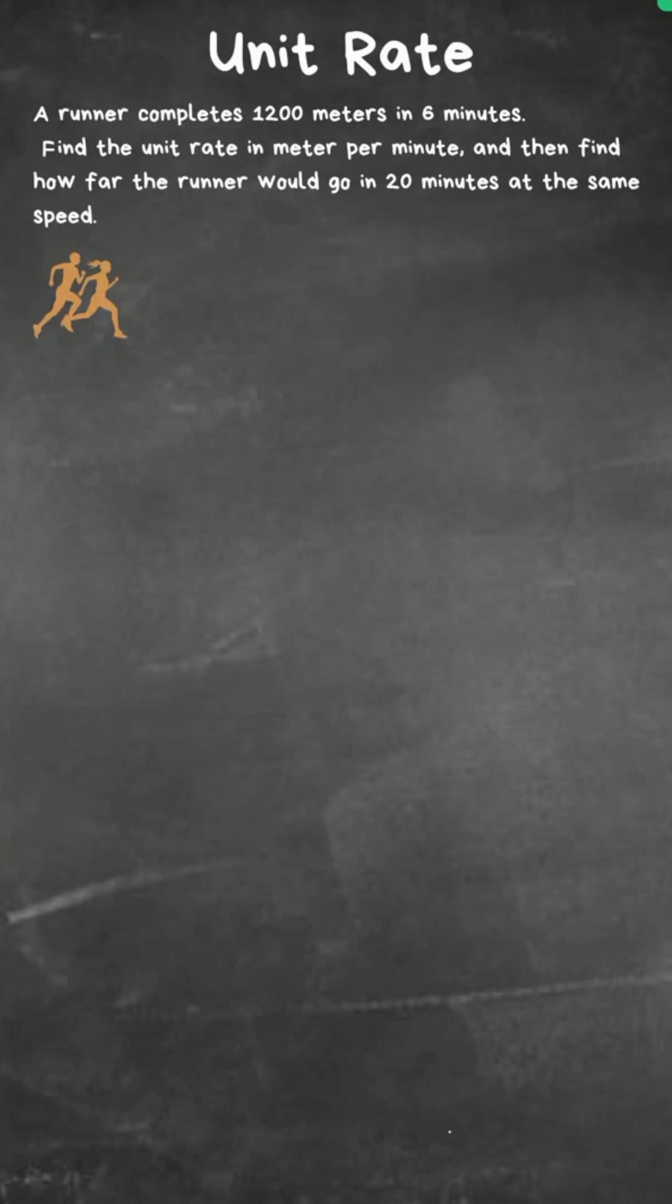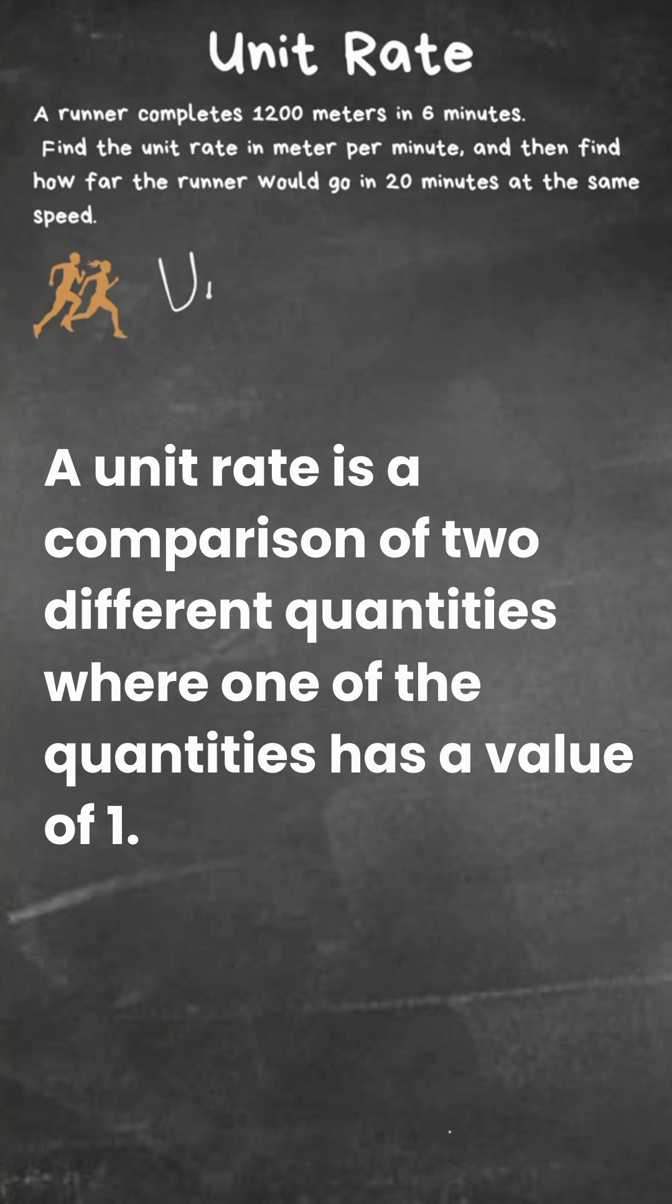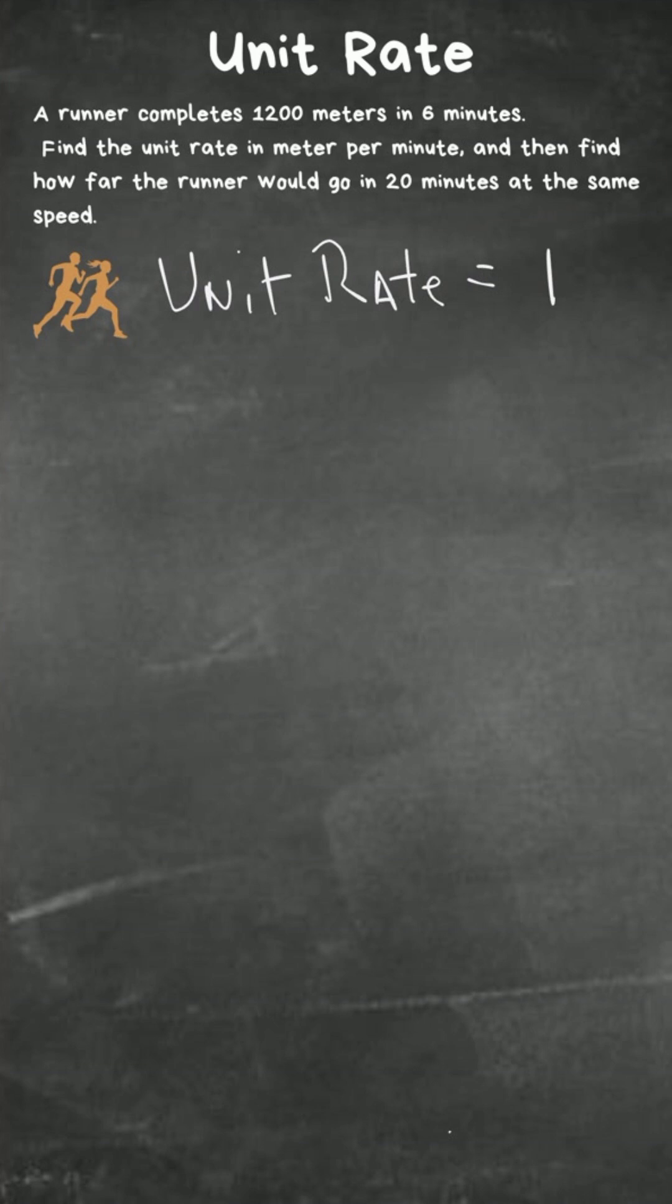Let's go over a unit rate problem. A unit rate is simply finding a value of one when you're comparing two objects - you're setting one object to one. So we have this problem: a runner completes 1200 meters